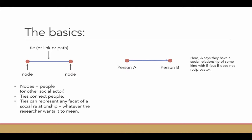But you could also have a reciprocal relationship where person A says that person B is someone they have a relationship with and person B says the same thing. They're each identifying each other as someone they have some kind of social relationship with.